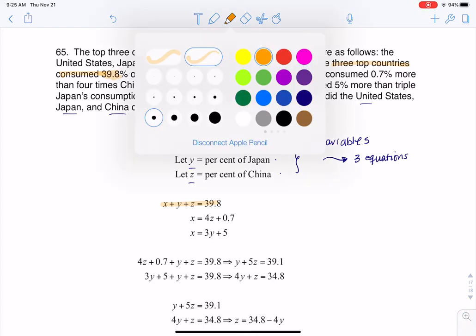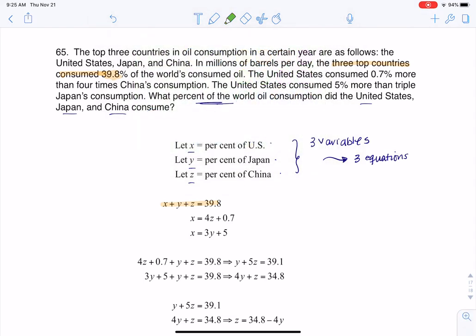And then let me change highlighters just so we can track this. It now says the United States consumed 0.7% more than four times China's consumption. Well, if we talk about the U.S. consumption, we called that x. If we talk about China's consumption, we called that z.